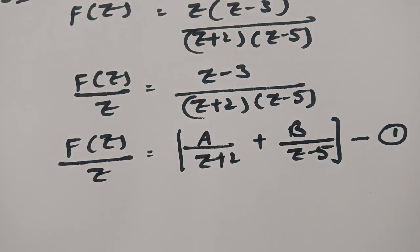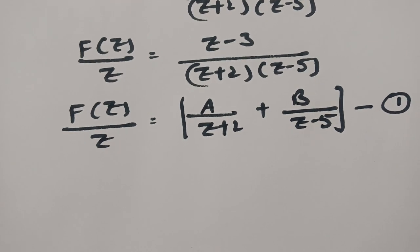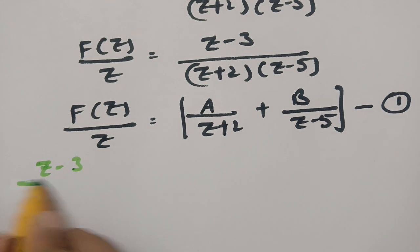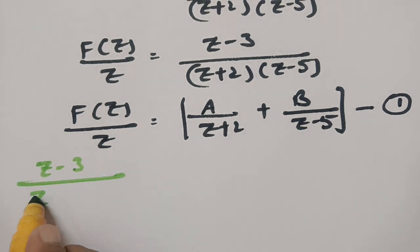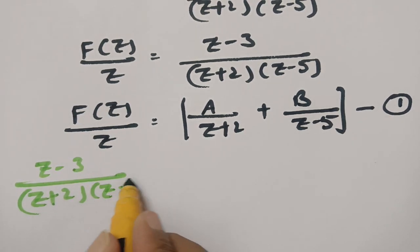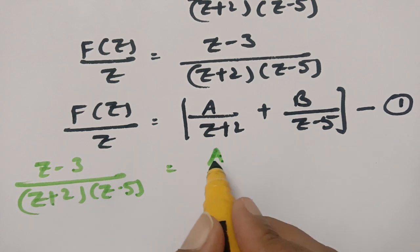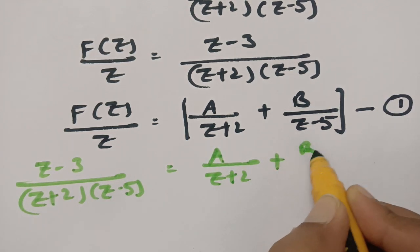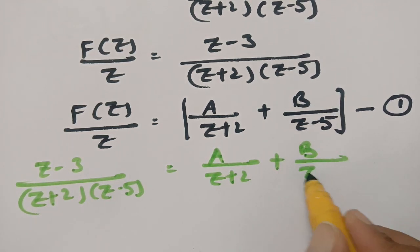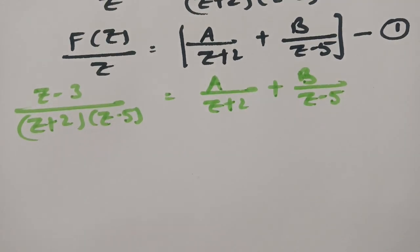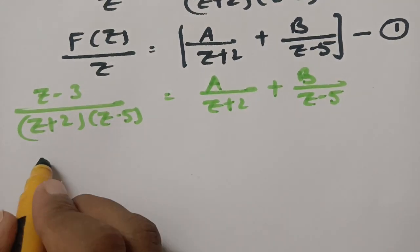Now resolving into partial fractions: Z minus 3 by Z plus 2 into Z minus 5 equals A by Z plus 2 plus B by Z minus 5. Taking LCM as Z plus 2 into Z minus 5, this gives A into Z minus 5 plus B into Z plus 2.